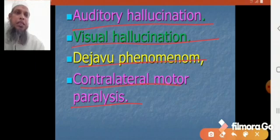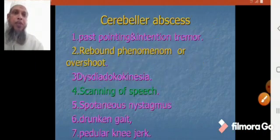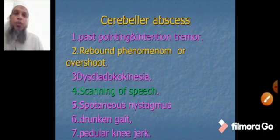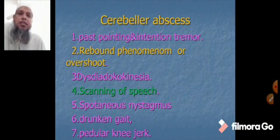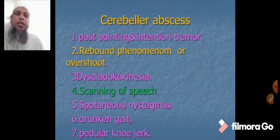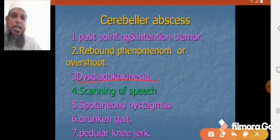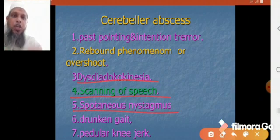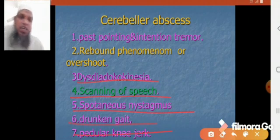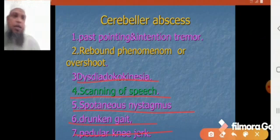If the abscess affects the cerebellar lobe, the clinical features include past-pointing and intentional tremor, rebound phenomenon or overshoot, dysdiadochokinesia, scanning speech, spontaneous nystagmus, drunken gait, and pendular knee jerk.